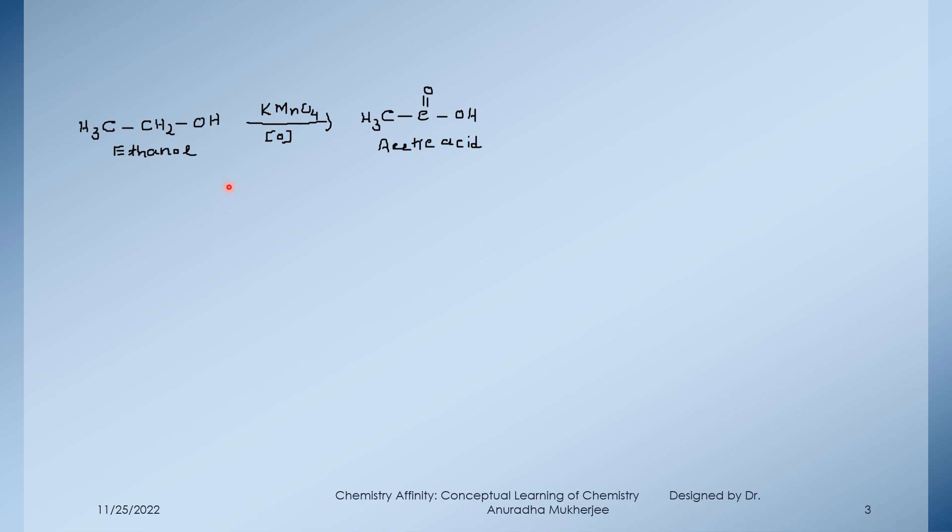If we oxidize ethanol using a strong oxidizing agent like KMnO4 or Jones reagent, CH2OH will be converting to carboxylic acid, say acetic acid.